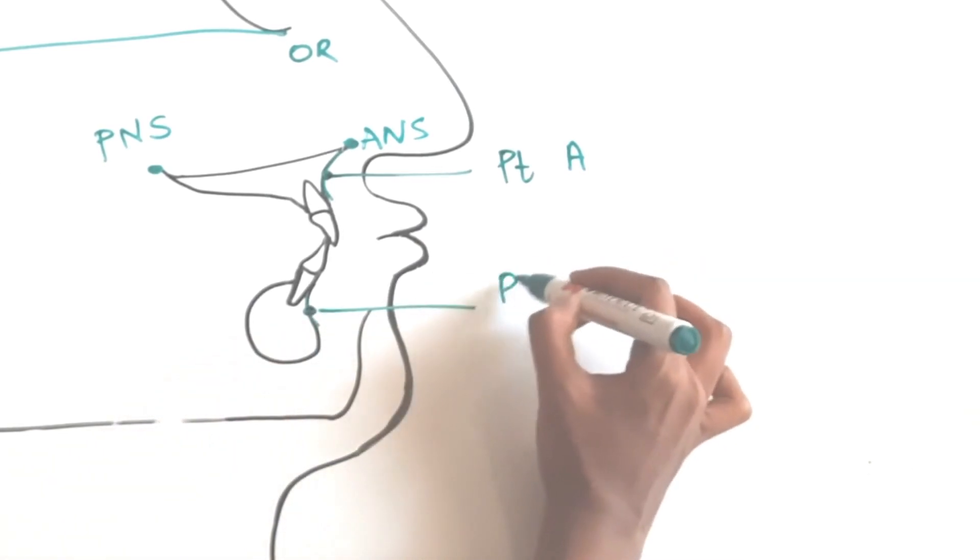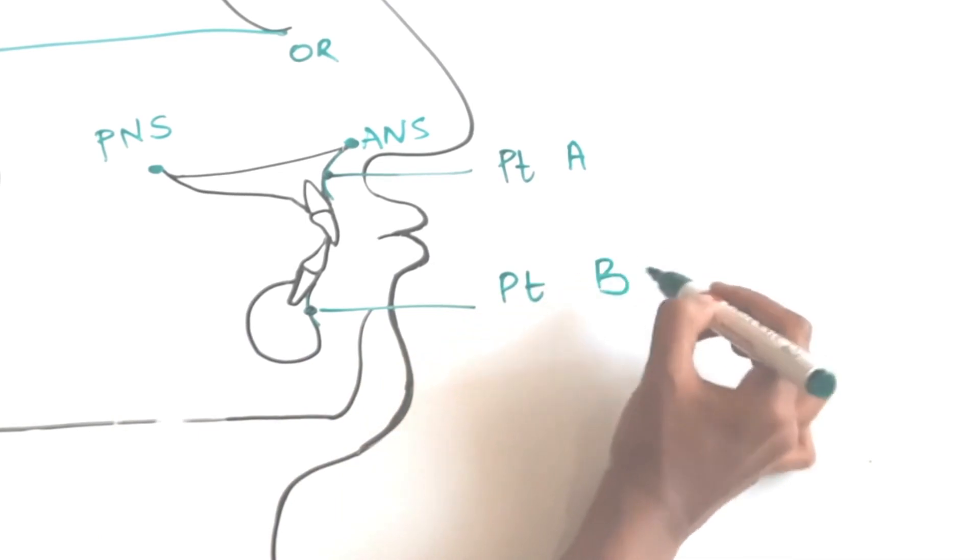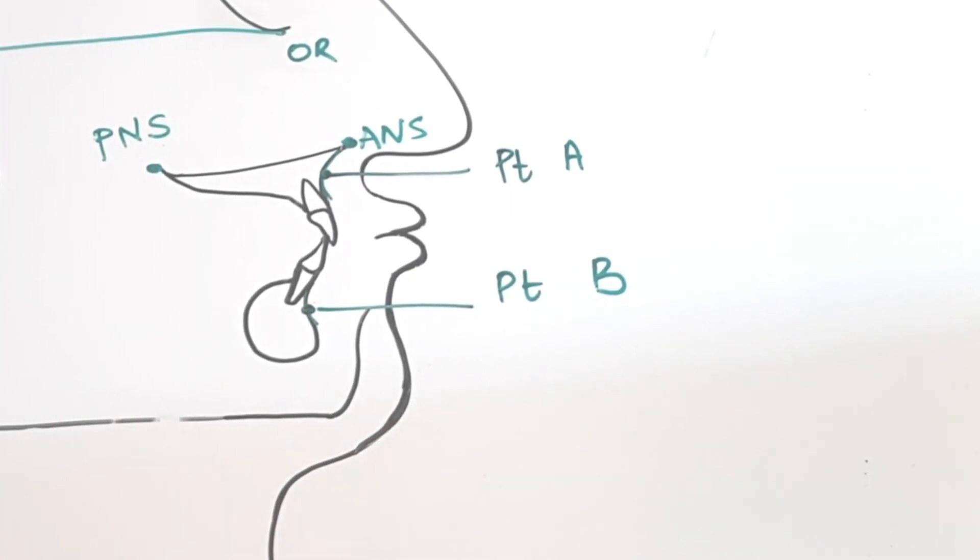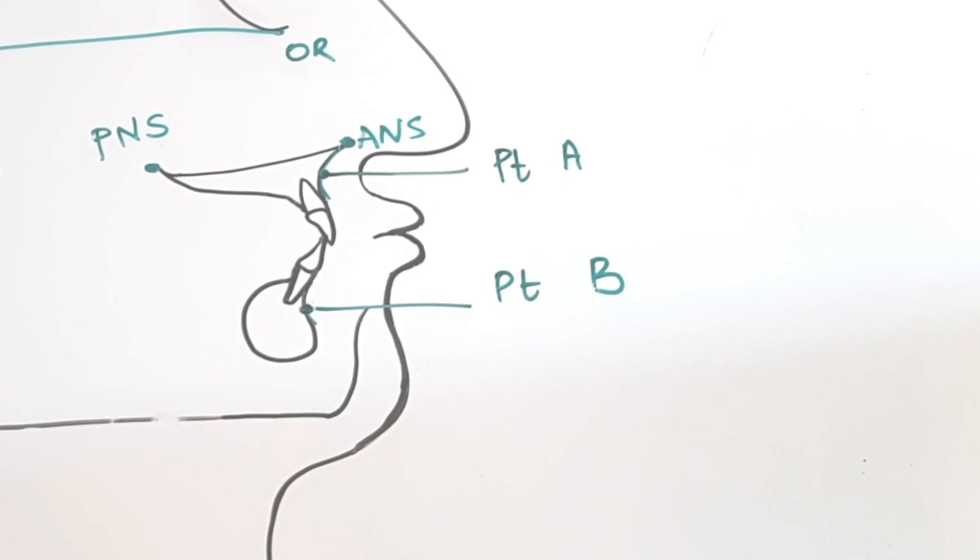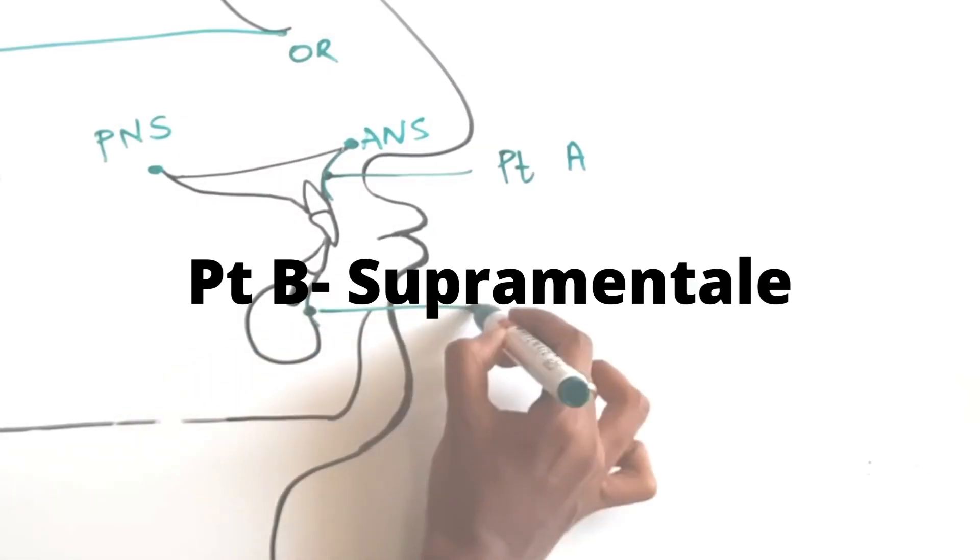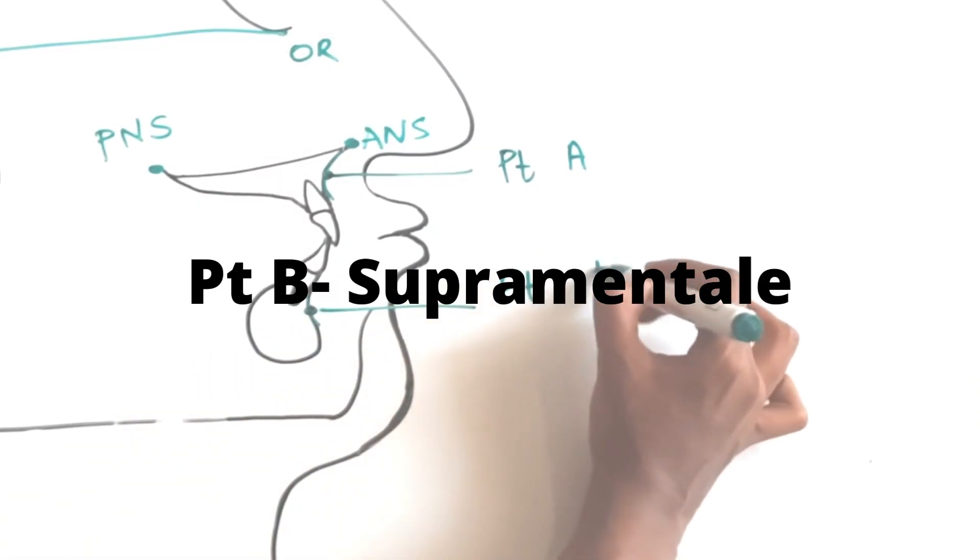The deepest point in the curve between pogonion and the superior most point in the mandibular process is called point B. This is also called supramenteal because it's above the menton.